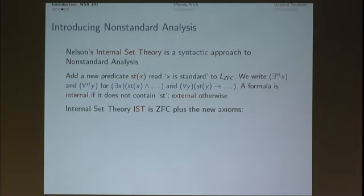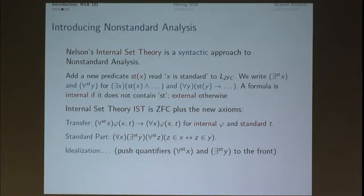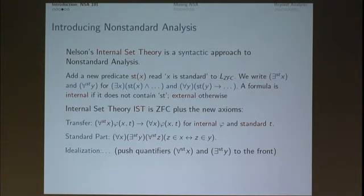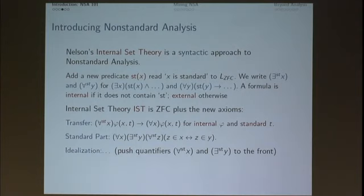IST is just ZFC — which is our internal formula — plus three new axioms: I, S, and T, that is idealization, standard part, and transfer. Robinson had these as theorems; Nelson just adopts them as axioms. Transfer says: if something is true for the standard reals, it's true everywhere, with some conditions. Transfer is about as non-constructive as the original sin, the law of excluded middle. Standard part can be salvaged. Idealization is just a bookkeeping device, allowing you to push standard quantifiers to the front of the formula.